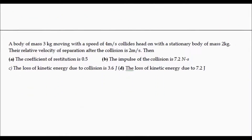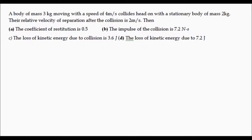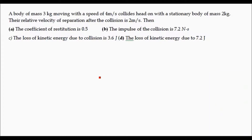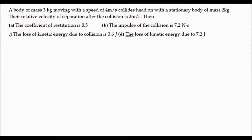The next problem: a body of mass 3 kg moving with a speed of 4 m/s collides head-on with a stationary ball of mass 2 kg. Their relative velocity of separation after the collision is 2 m/s. You are given four options and must find out which ones are true. It is possible that more than one option is correct.